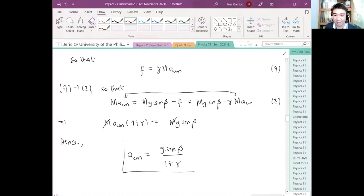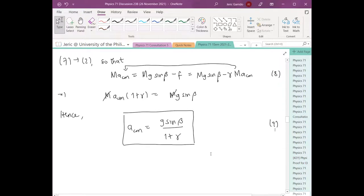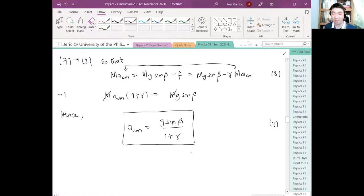Thus, if I transfer this to the other side, I will get M quantity ACM quantity 1 plus gamma equals MG sine beta. And therefore, if I cancel the masses, hence I will get ACM is simply G sine beta all over 1 plus gamma. This is the acceleration of the ball downward. Questions? Gets? Now it's dependent on the type of the rigid body. The center of mass acceleration will be different depending on gamma.